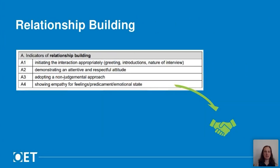The first clinical criterion is relationship building. Ways to evidence this include starting the role play appropriately — perhaps using introductions where needed or a greeting — and then establishing the purpose of the conversation. You also need to show respect for the patient and their situation, and avoid judging their opinions or attitude towards their health, even if part of your task is to try to change that attitude. You also need to show empathy for the situation the patient describes, both in the words you say and in the tone of voice you use.